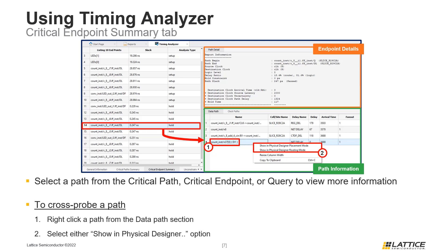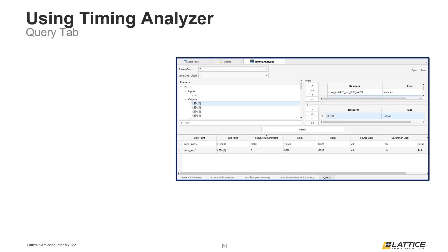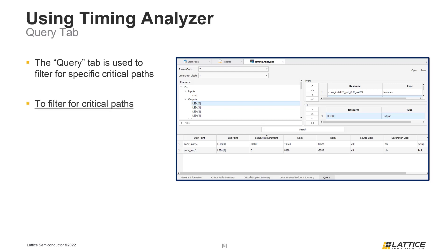One important thing to remember is that the worst paths in a design can also be cross-probed using Radiant-generated timing reports. The final Timing Analyzer tab we are going to discuss is the Query tab. The purpose of the Query tab is to search for specific paths in a design by specifying the start and end points for a path. To search for a specific path, select a component from the Resources section of the Query tab, as can be seen from the example on the slide.